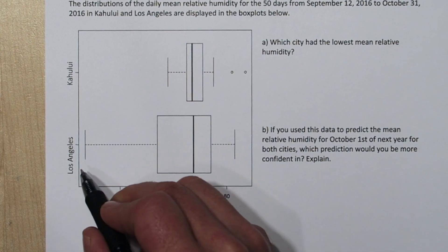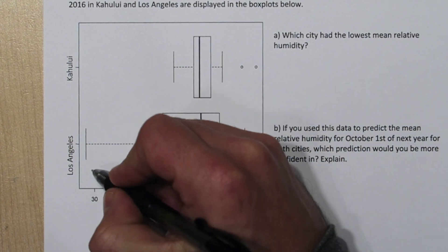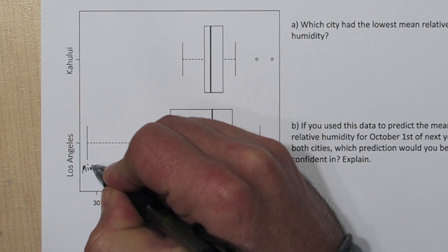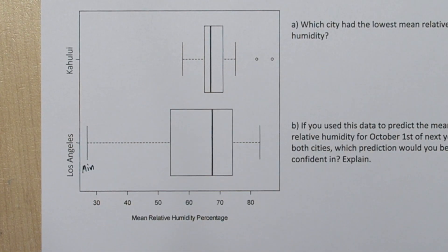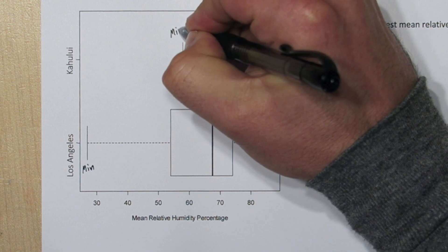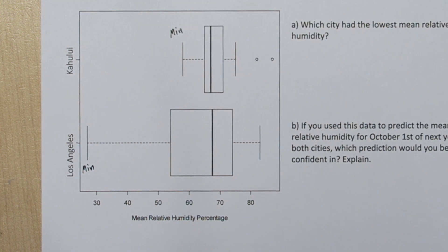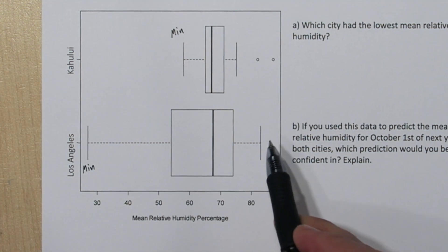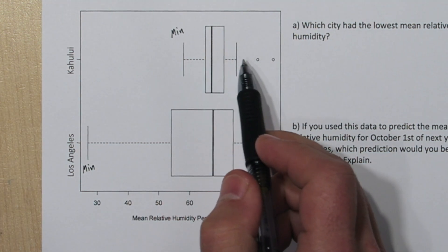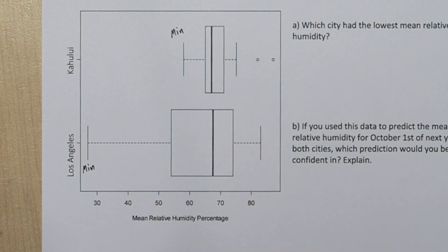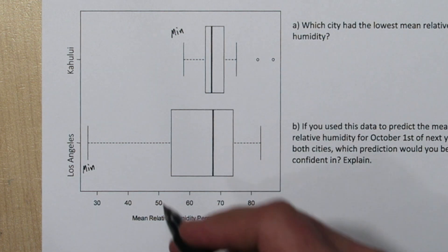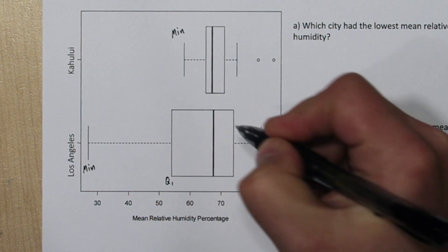The minimum is this tail on the left — for Los Angeles it's right here, and for Kahului it's up here. It represents the lowest observation observed, in this case the lowest mean relative humidity percentage. Technically these little tails are called the whiskers, and these are the boxes, and the left end of the box is called quartile 1.